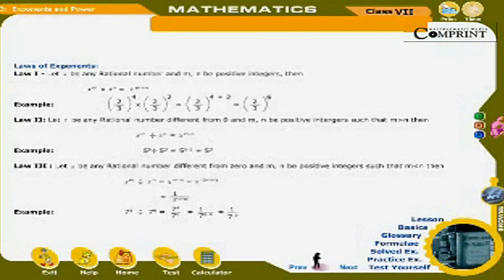Law 3: Let x be any rational number different from 0, and m and n be positive integers such that m < n. Then x^m ÷ x^n = x^(m−n) = x^(−(n−m)) = 1/x^(n−m). Example: 7⁴ ÷ 7⁶ = 7⁴/7⁶ = 1/7^(6−4) = 1/7².